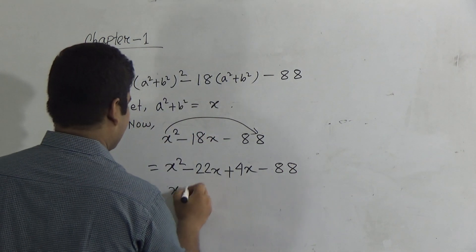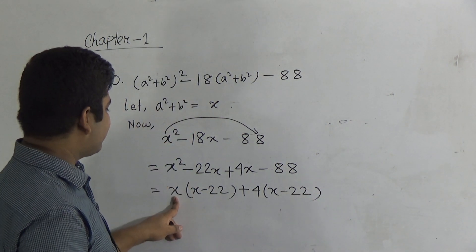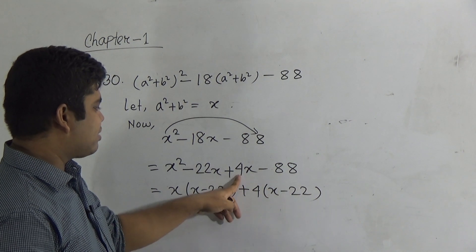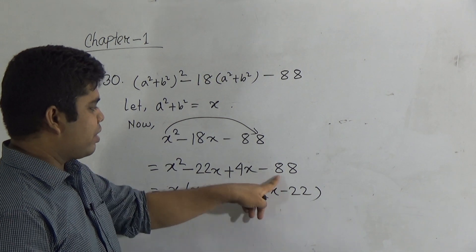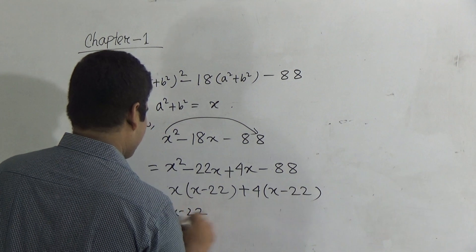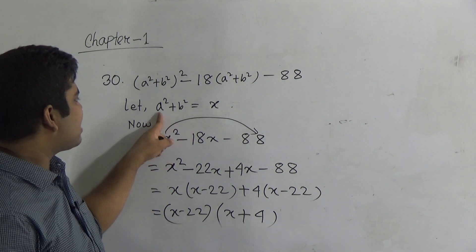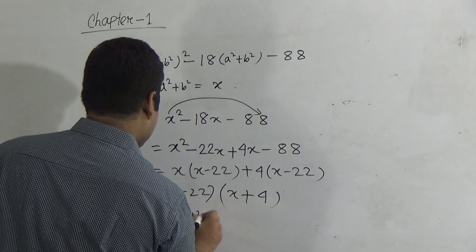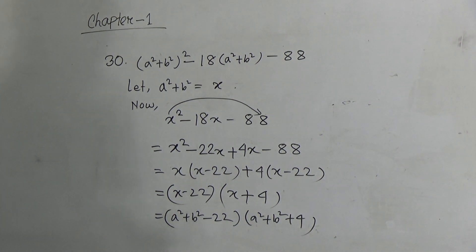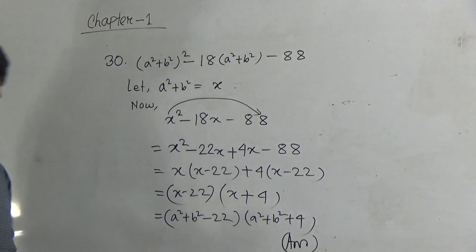We take x as common from the first two terms and get x(x minus 22). Then we take 4 as common from the next two terms and get 4(x minus 22). From the whole expression, (x minus 22) is common, leaving (x + 4). Now we put back the value of x, which is a² + b². So the factors are (a² + b² minus 22)(a² + b² + 4). This is the answer.